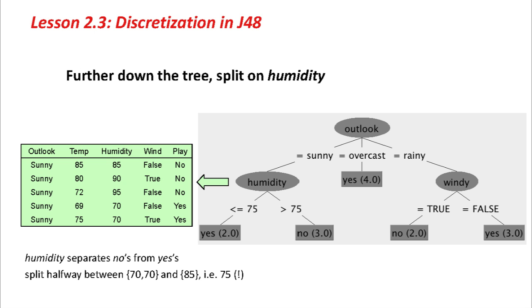Here's an example. We've already split on Outlook at the root. If we look at the sunny branch, there are 5 instances whose outlook is sunny. Looking at humidity, it's 70 and 70 for the two yes instances, and 85, 90, and 95 for the three no instances. It neatly splits the instances into yeses and noes if we choose a split point somewhere between 70 and 85. We choose it at 75 — not exactly halfway, but since we have two instances at 70 and one at 85, we use a weighted halfway point, a third of the way from 70 to 85. That's the split point, and in this case that's the end of the matter.